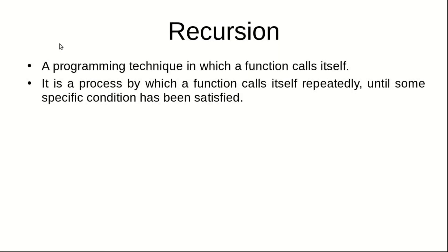Today we are going to talk about tail recursion. Before we start, I want to explain a few things about recursion first. Recursion is a programming technique in which a function calls smaller instances of itself. It's a very effective problem-solving technique which greatly simplifies the way we can solve a problem. Basically, a function calls itself repeatedly until the base case has been satisfied.